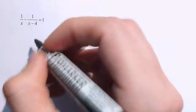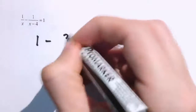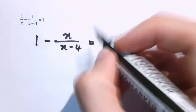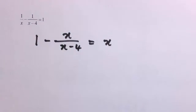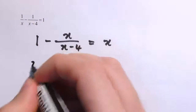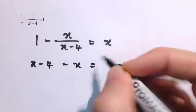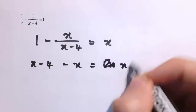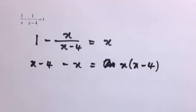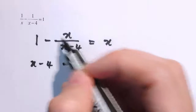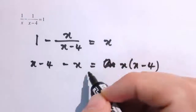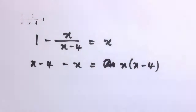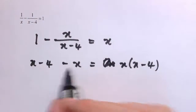Now we have 1 over x minus 1 over (x minus 4) equals 1, so again two different denominators. Let's multiply everything through by x first, giving 1 minus x over (x minus 4) equals x — being careful to multiply the right-hand side by x as well. Then multiply everything through by (x minus 4), giving 1 times (x minus 4) minus x on the left, and x times (x minus 4) on the right. On the left-hand side, x minus x cancels out.